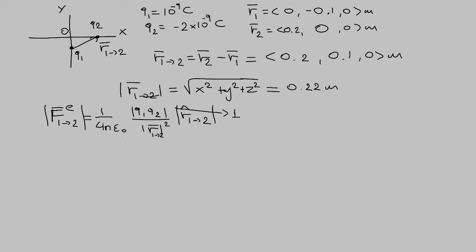If we go in and use the numbers from this problem, we will find that the magnitude of the electric force from 1 to 2 is equal to 9 times 10 to the 9, and this is the constant 1 over 4 pi epsilon 0 right here, times the absolute value of charge Q1, which is 10 to minus 9, times charge Q2, which is minus 2 times 10 to minus 9.